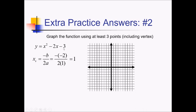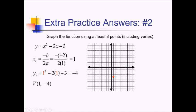Plugging that back into the original will give us the y-value of the vertex. So that's 1 minus 2, which is negative 1. Negative 1 minus 3 is negative 4. So we have a vertex of 1 comma negative 4. Now we need two more points, one of which will be the y-intercept. The y-intercept is just this constant at the end — the only thing left if you plug in 0 for x. So we have a y-intercept of 0 comma negative 3.